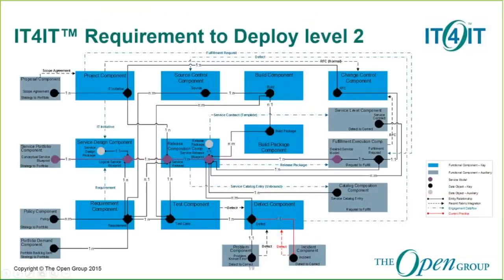This is a level two architecture of requirement to deploy. It is a more detailed view of the components, data elements, and relationships. The gray functional components on the outside edges of the diagram are the supporting functional components or functional components that come from one of the other value streams. Requirement to deploy uses information from strategy to portfolio, as seen on the left, in the form of scope agreements, conceptual service blueprints, policies, and portfolio backlogs, all coming in as inputs into the requirements to deploy value stream.